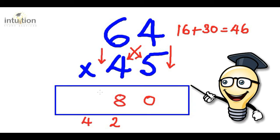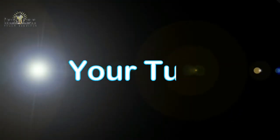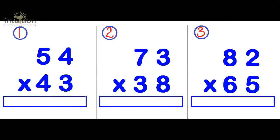Then finally, 6 times 4, which is 24. Add the 4. So that gives us 28. So the answer is 2880. Okay, so hopefully by now you would have got a good handle on the technique. So what I'll do is I'll leave you with these three questions for you to try. You can pause the video and I'll join you in a few moments.